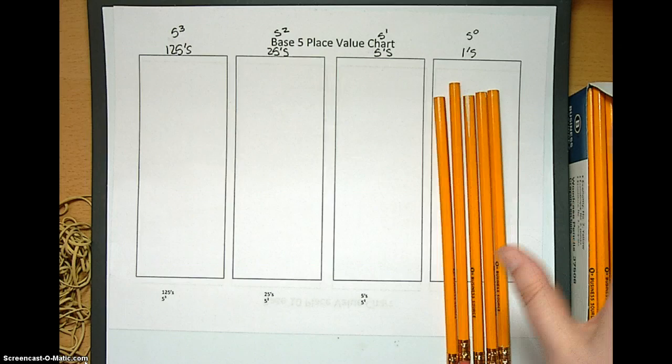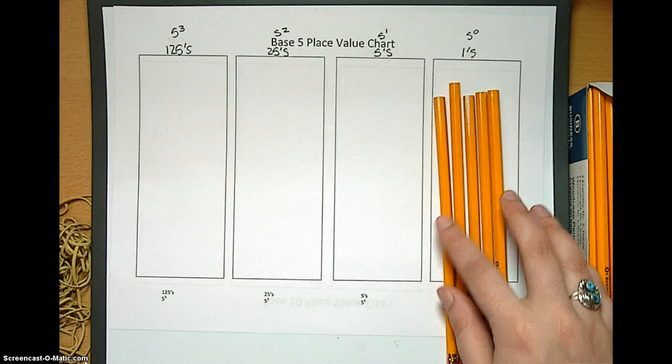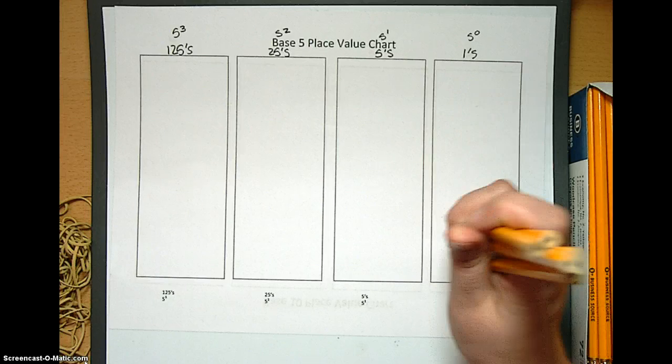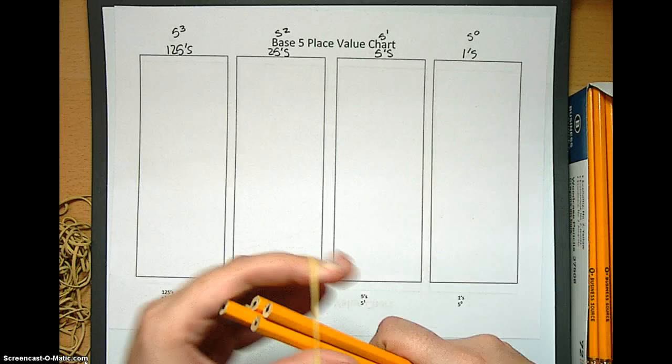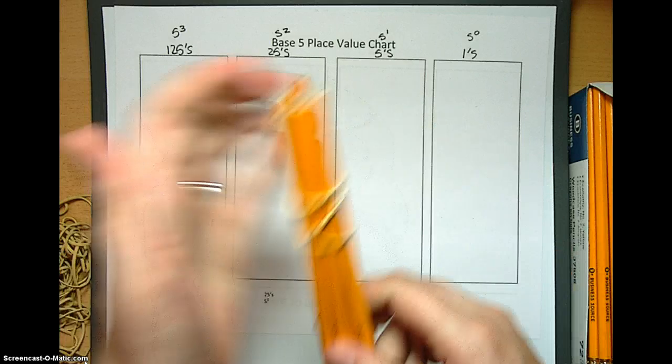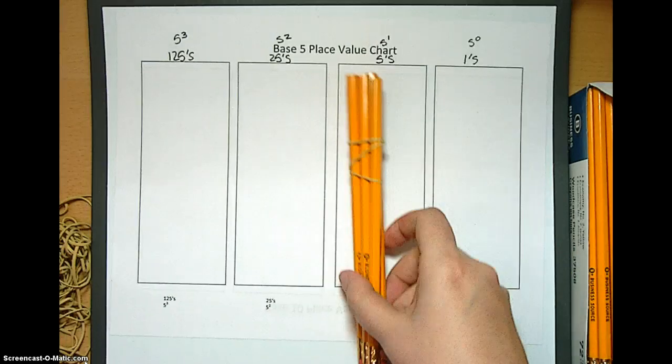And then there's another one. Is there a 5 in base 5? No, there's not a 5 in base 5. So what do we need to do? We need to bundle them up and make those 5 ones into one bundle of 5 and move it over to the next place value chart.